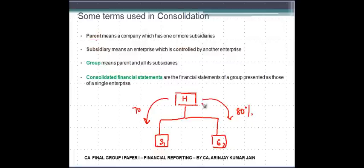Now with reference to this, let's see each of these terms. Parent means a company which has one or more subsidiaries. So this company H will be known as the Parent Company. Why? Because it has subsidiary 1, subsidiary 2 where it owns 70% and 80% respectively.